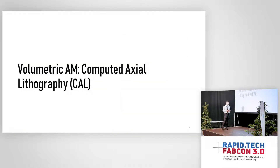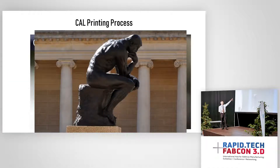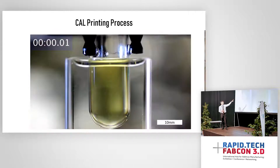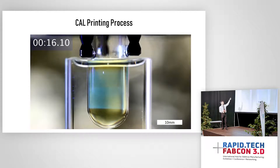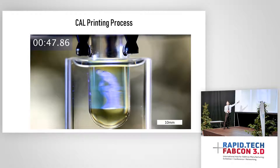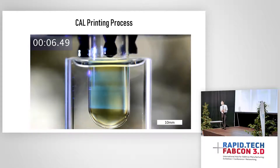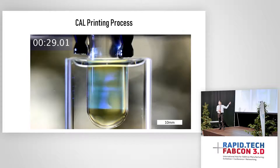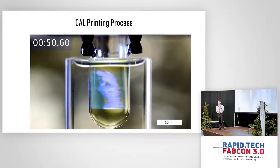Before I talk about how our system works, I want to show you how it looks. Let's say I want to print this sculpture — the Finca sculpture — in our system. You can see the timing in the left-hand corner, and you see the part form inside the volume simultaneously in just 50 seconds. This is the fastest 3D printing technology known to date, and this is the exact reason I was drawn to Professor Taylor's group.